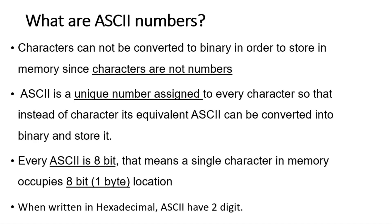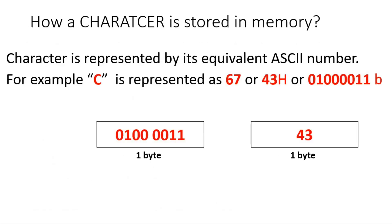This means every character takes one byte in memory — you may have studied this in various languages. For example, in C we say a character variable takes one byte of data in memory. That is because every character is assigned an ASCII value, that ASCII is stored in memory, and every ASCII is one byte or eight bits.